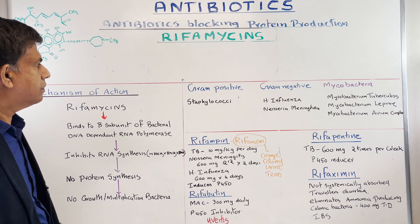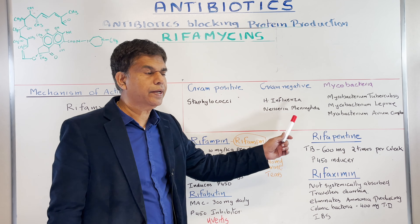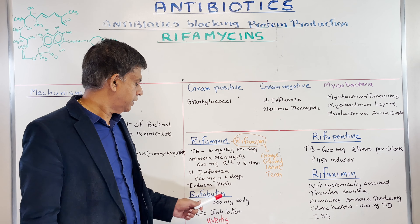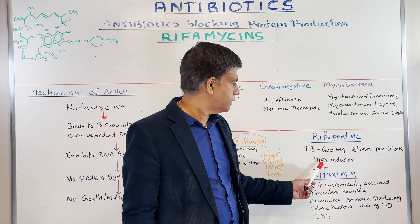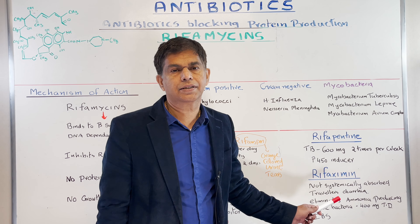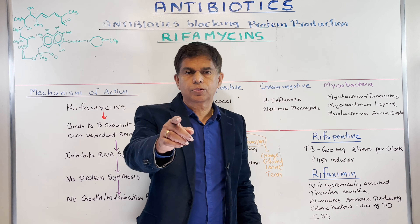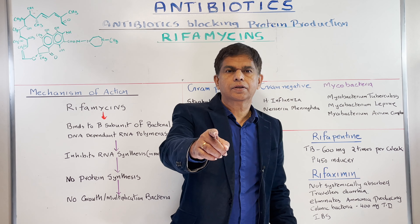To summarize: this class of antibiotics blocks protein production. The group is rifamycin — it binds to the beta subunit of the bacterial DNA-dependent RNA polymerase, inhibiting RNA synthesis, so no protein, no bacteria. Coverage is very limited for gram-positive and gram-negative, but mycobacteria coverage is important. Remember: rifamycin causes orange-colored urine; rifabutin can cause uveitis; rifapentine is used in TB; and rifaximin is the drug to remember for hyperammonemia, liver cirrhosis, and irritable bowel syndrome.